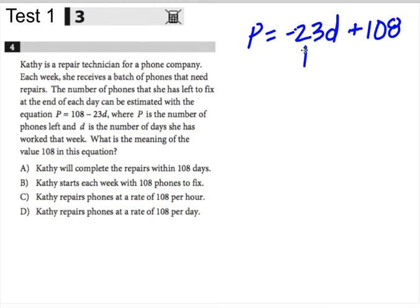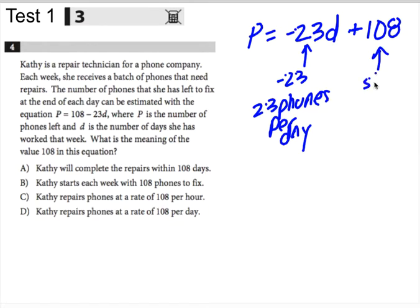Okay, so this negative 23 means that she can do 23 phones per day. Okay, and this is the starting number of phones, right? This is the starting number of phones. It's your y-intercept.